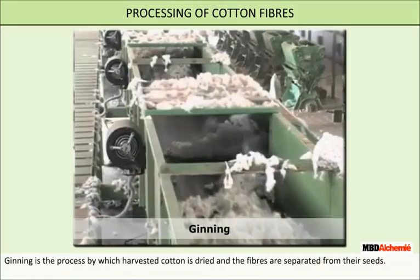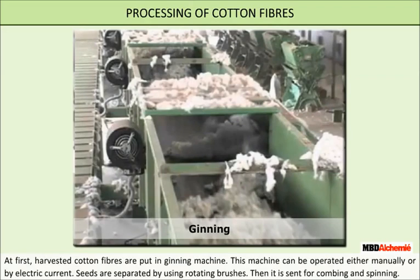Ginning is the process by which harvested cotton is dried and the fibers are separated from their seeds. Harvested cotton fibers are put into the ginning machine, which can be operated manually or by electric current. Seeds are separated by rotating brushes, and then the cotton is sent for combing and spinning.